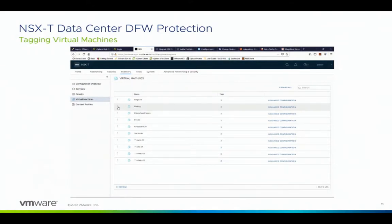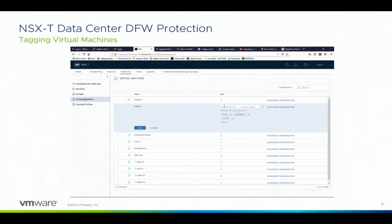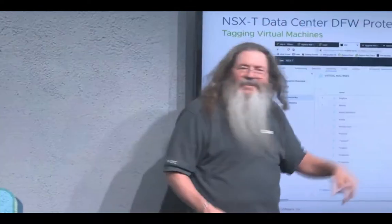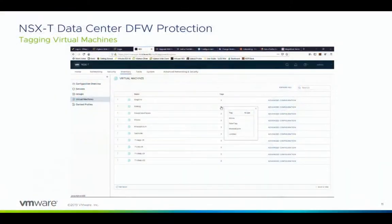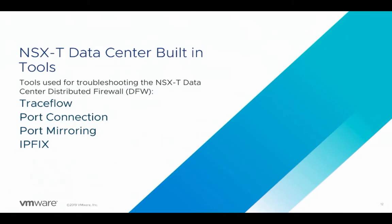One thing I get asked in classes a lot is how do I set up those tags? It's really not very hard. In the demo: go into inventory, get to your virtual machines, choose the one you want to tag, identify the edit, go to the field, put in the new tag, and do not forget to hit that green check mark or it will not take. Hit the green check mark, save, and you have a tag. That tag can then be used to populate the groups. This is the policy manager - a simplified UI. Some other tools in that simplified UI: Traceflow, Port Connection, Port Mirroring, and IP Fixer.